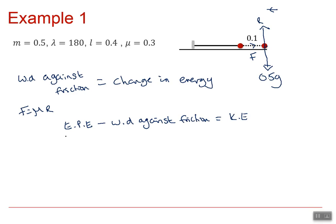So our elastic potential energy, lambda x squared over 2L, remember. So that's lambda times the extension squared over 2 times the natural length of the string. So we've got 180 times 0.1 squared over 2 times 0.4. Minus the work done against friction. So that is mu is 0.3 times R, which is 0.5g times the distance, which is 0.1. And that's going to give us our kinetic energy.